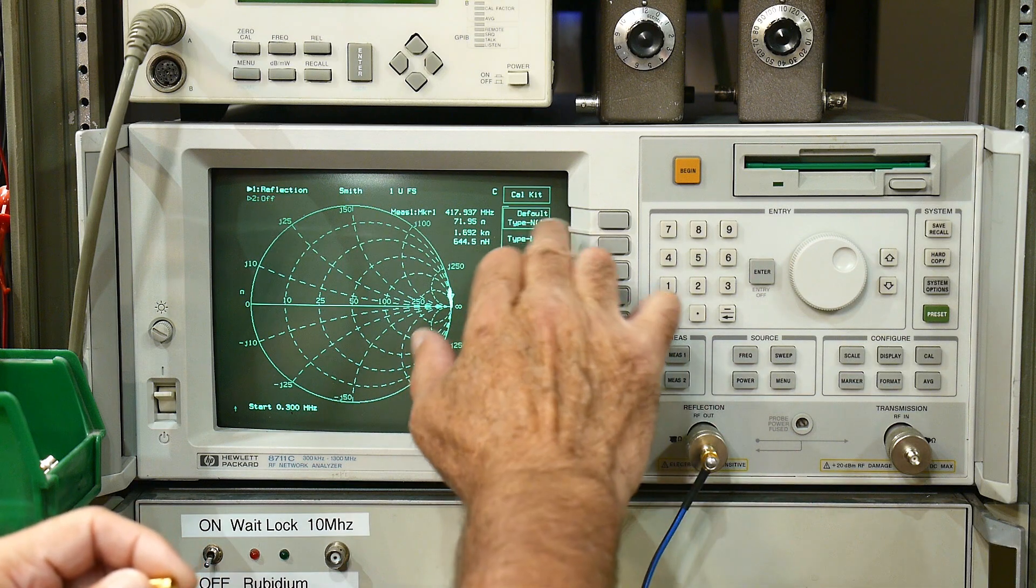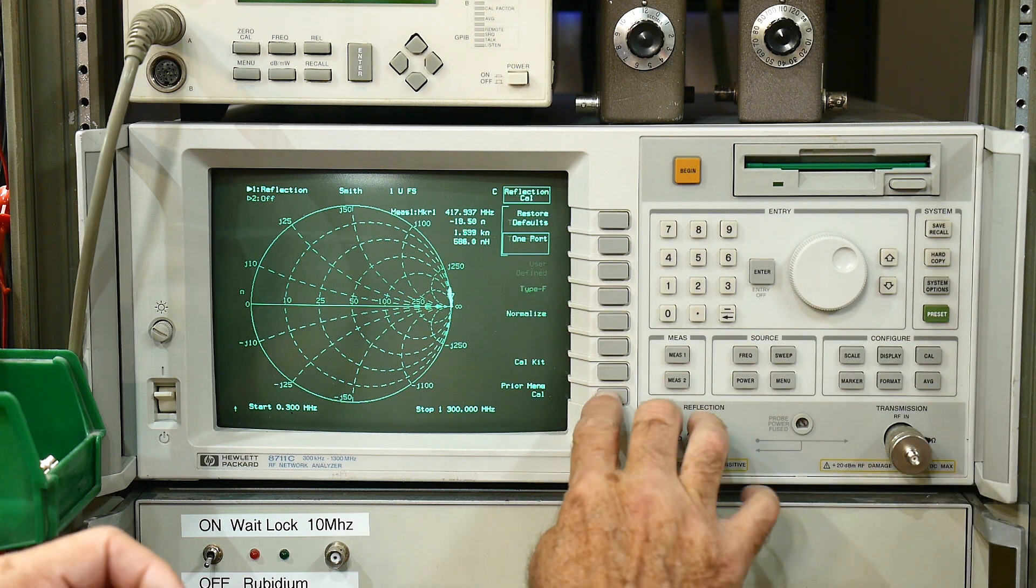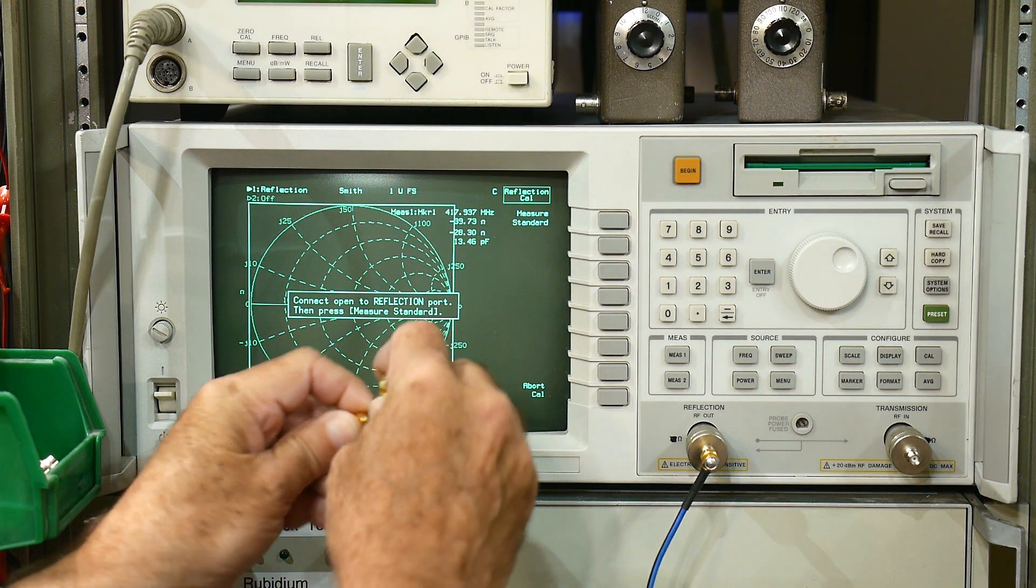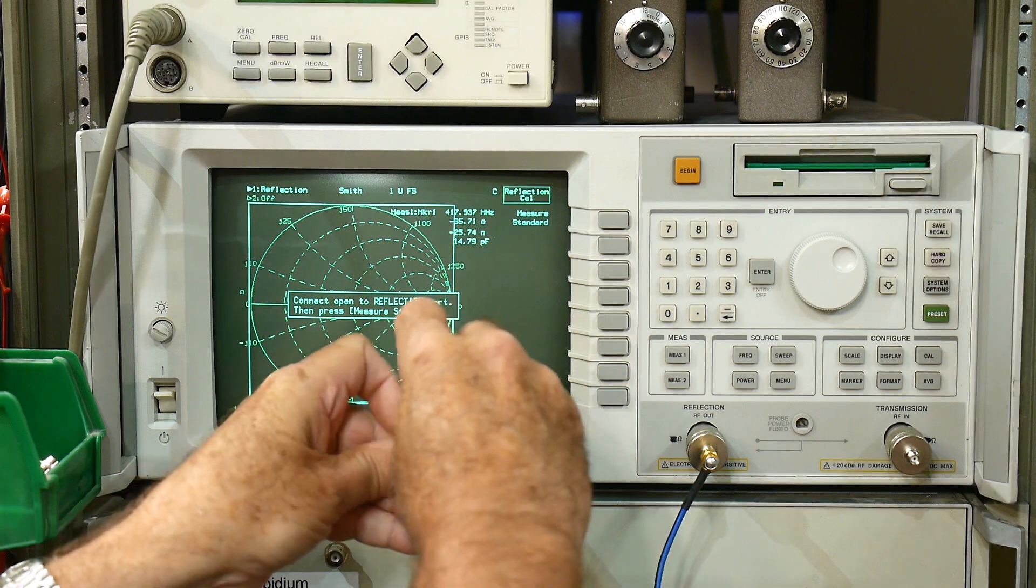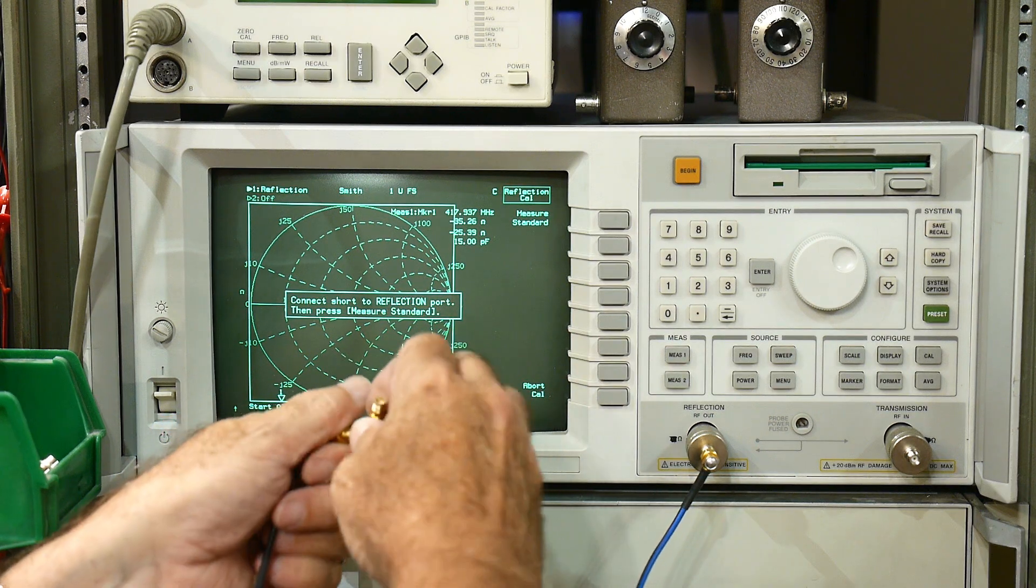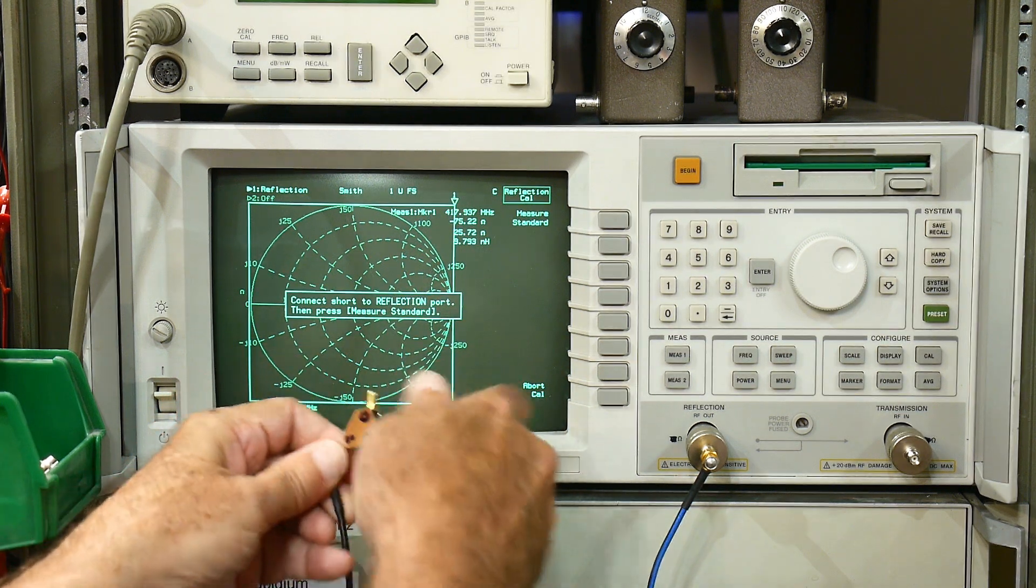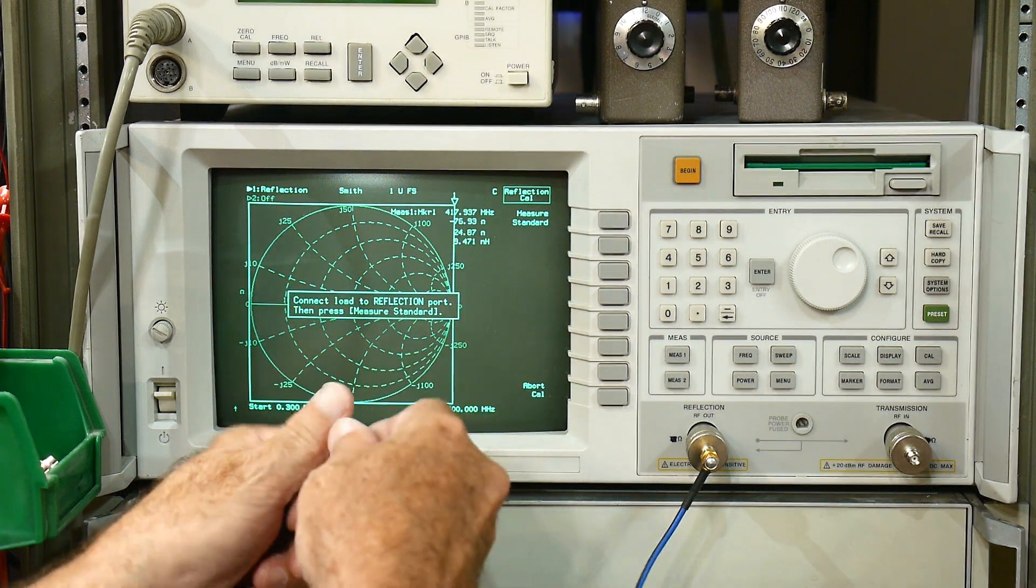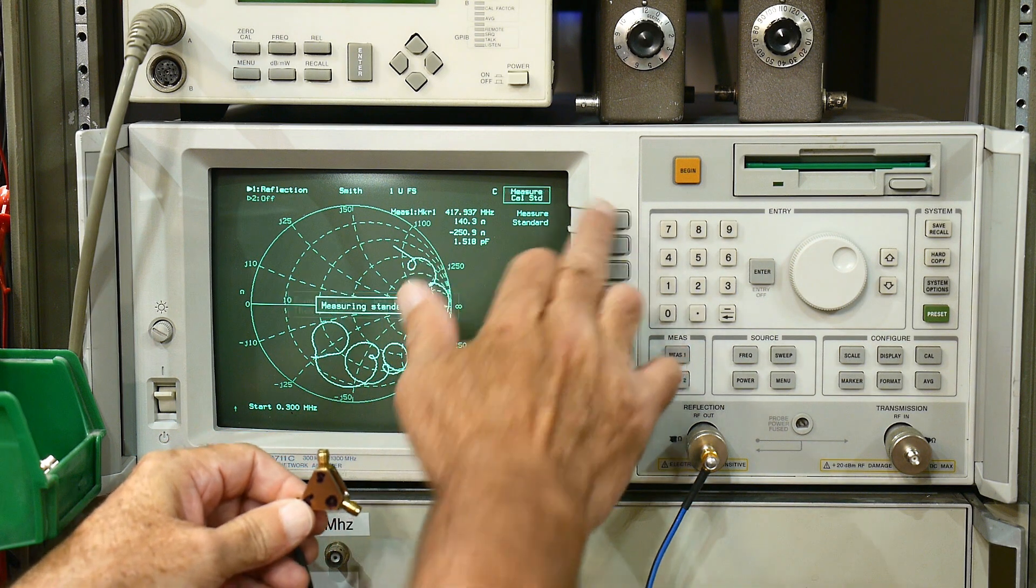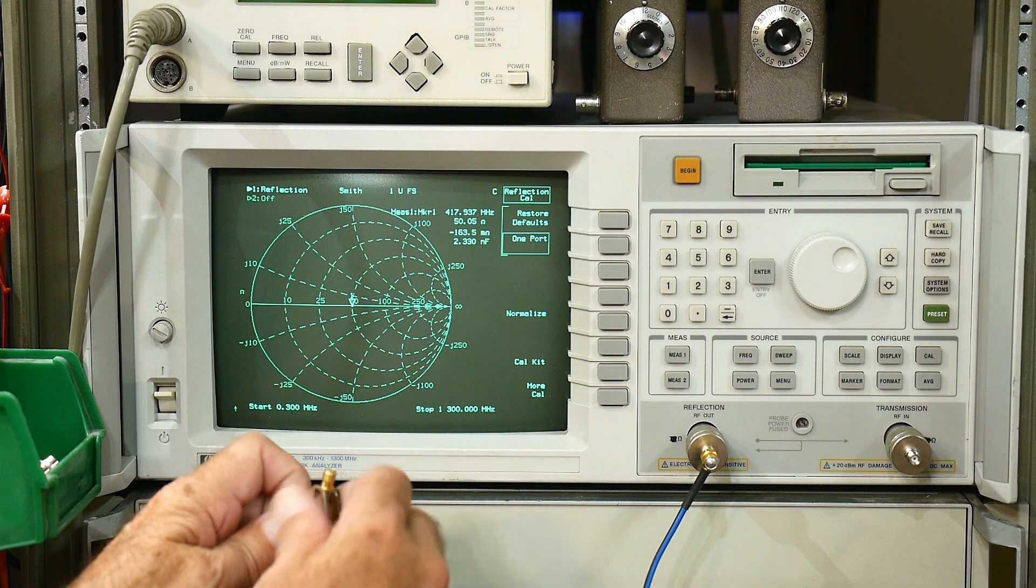Cal. Let's make sure the cal kit is set correctly. And we will do a one port calibration. It says connect your open. And I'm using my little home built cal kit here. Short. Short. Load. All right. So we are calibrated. Very nice.